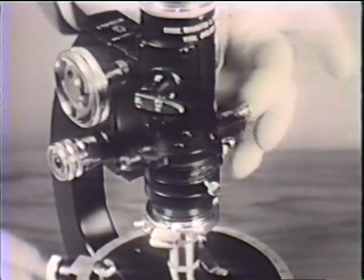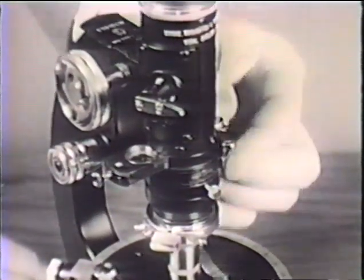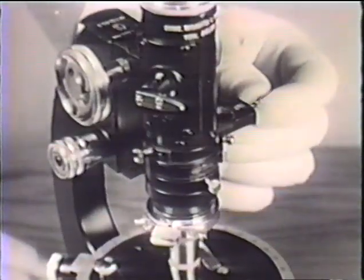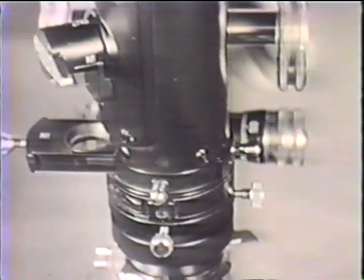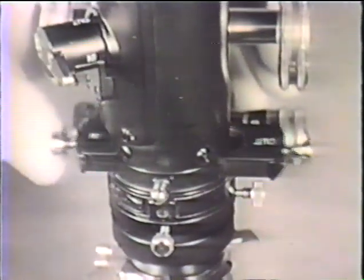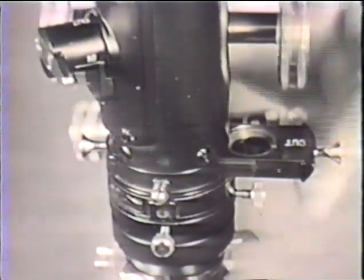Another filter must be placed between the object and the eye to act as analyzer. It is set with its vibration direction at right angles to that of the polarizer so as to extinguish the direct light. It's carried on a slide by which it can be removed from the tube when not required.